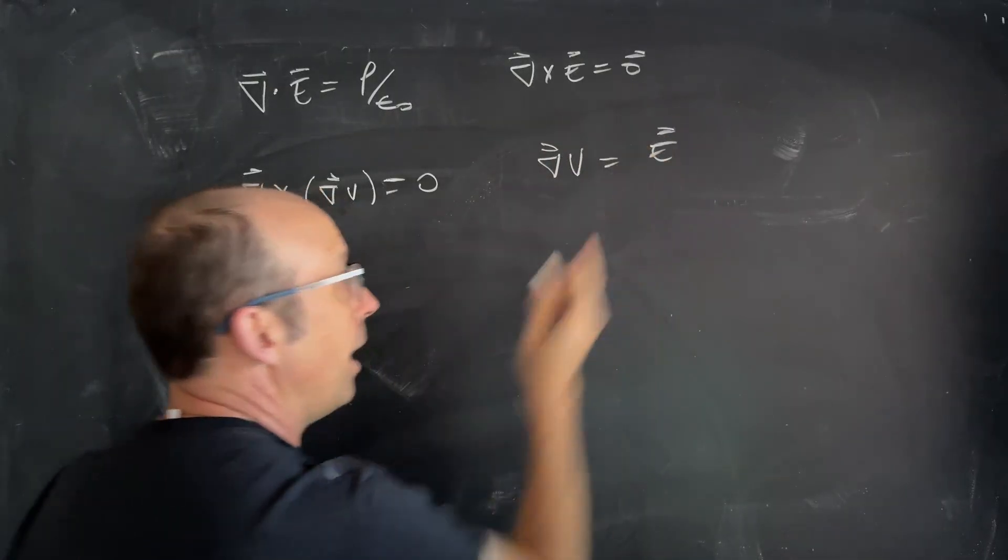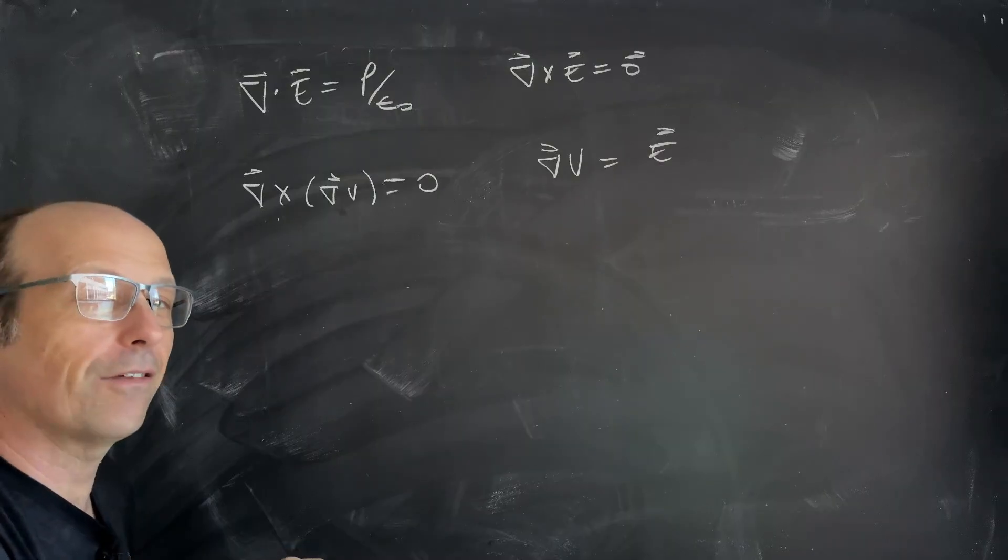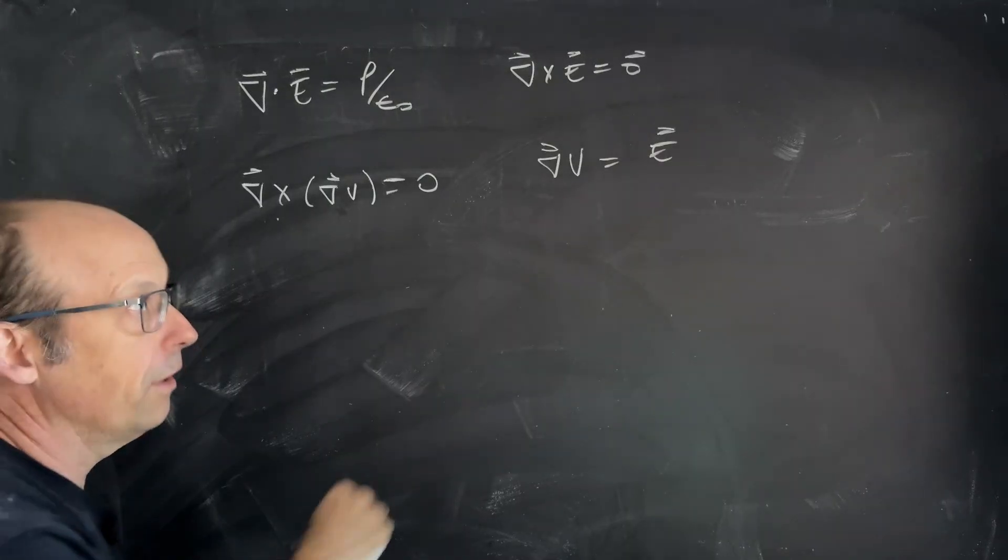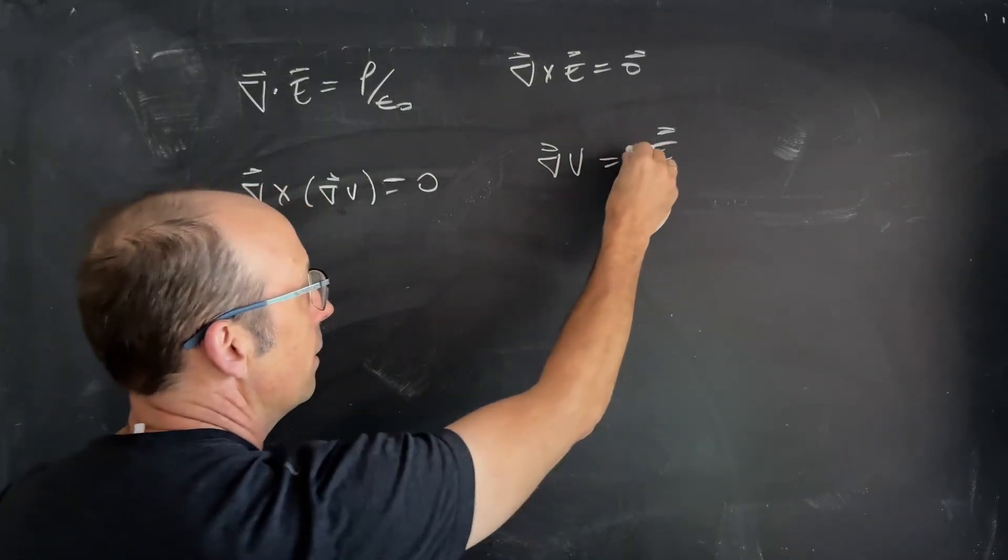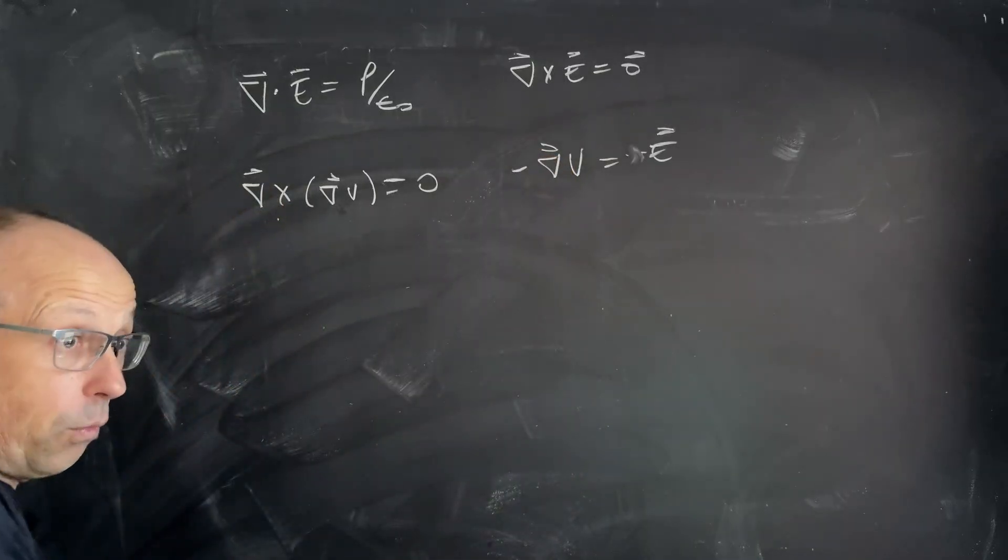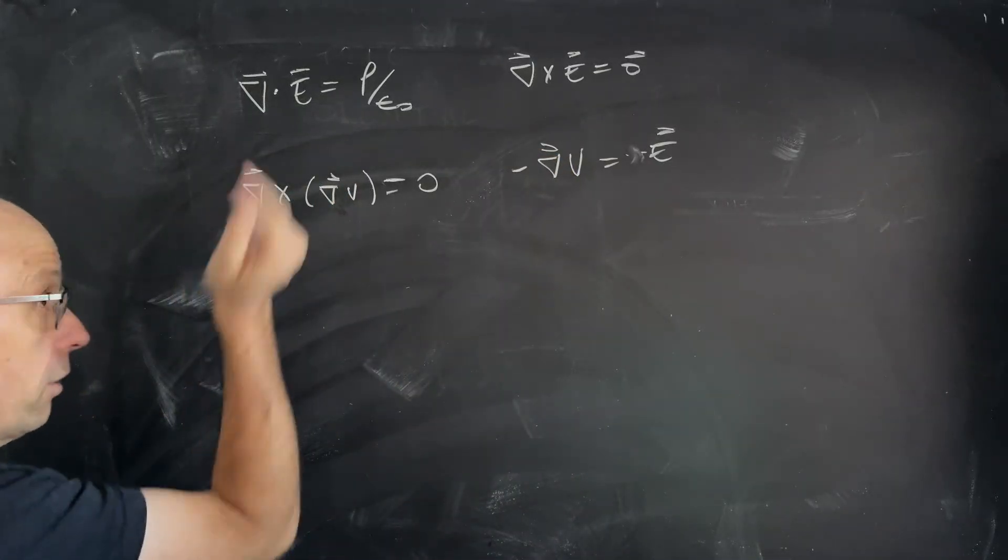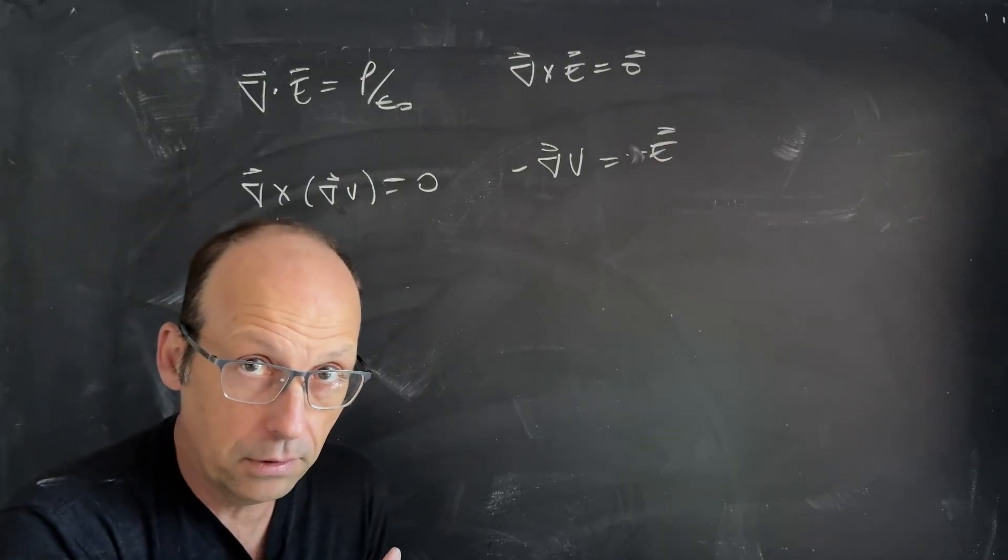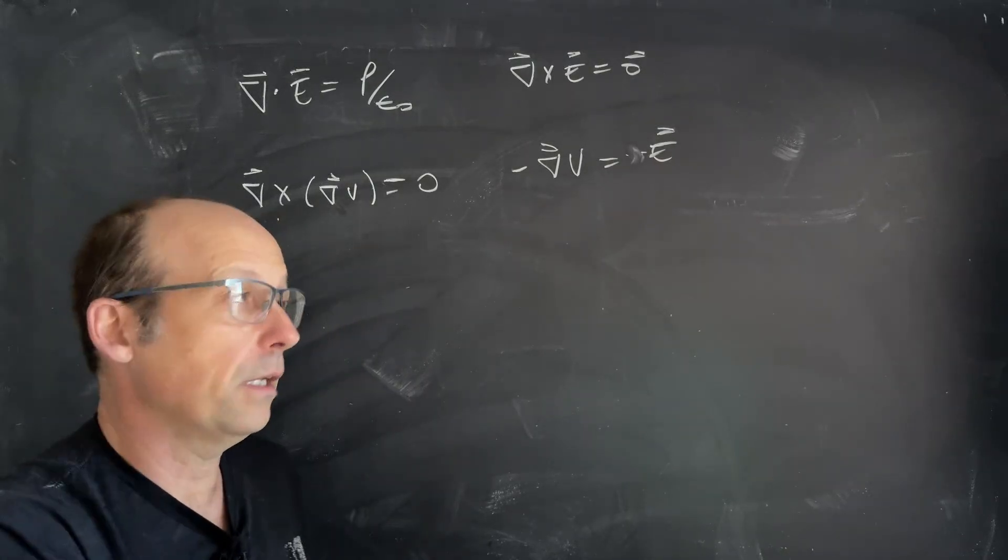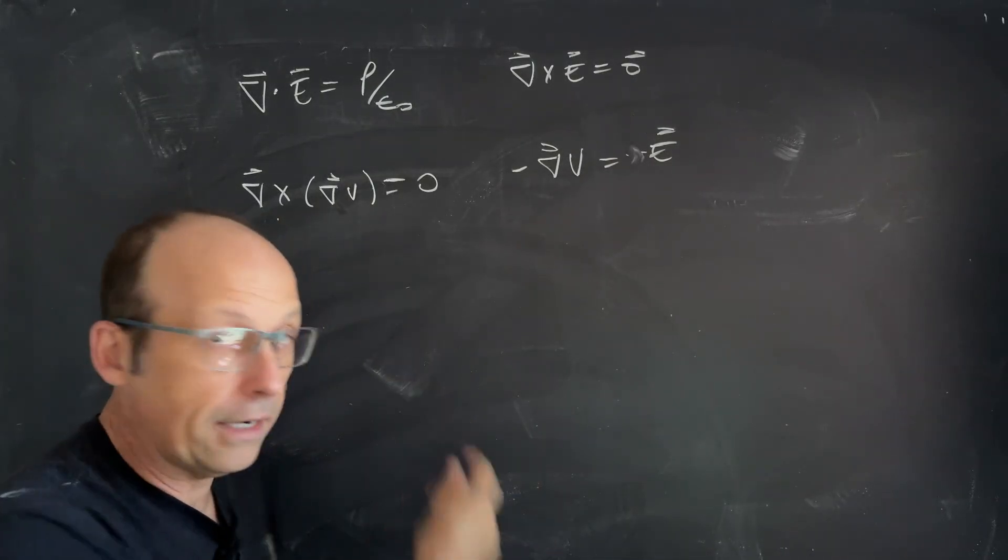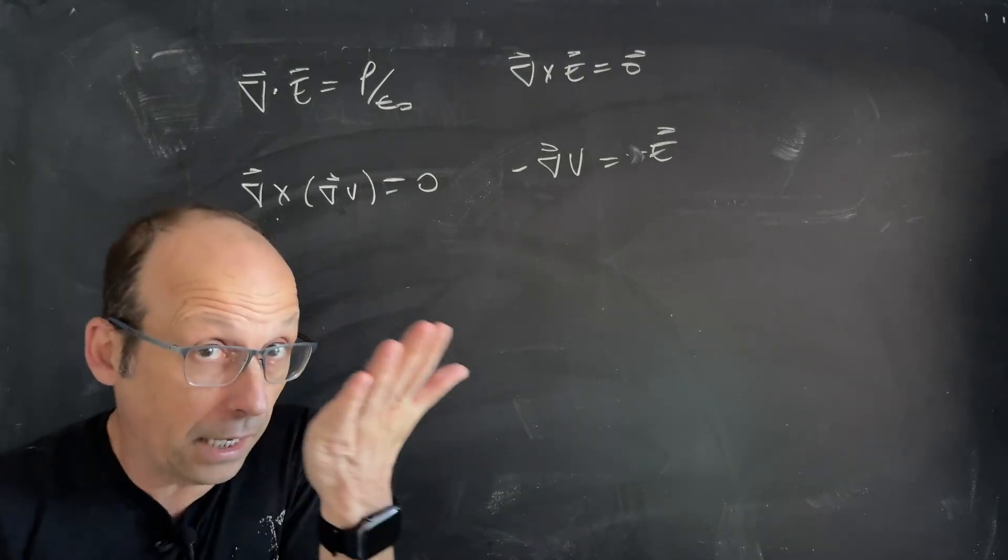But, we wanted it to be negative, remember? It was negative before. So, we're going to make it negative again. Or we can put the negative over here. And that still works. I can put in a negative Del V in there. And I take the cross product. It has to be zero. So, let's let the electric field be the gradient of the potential. We did that.